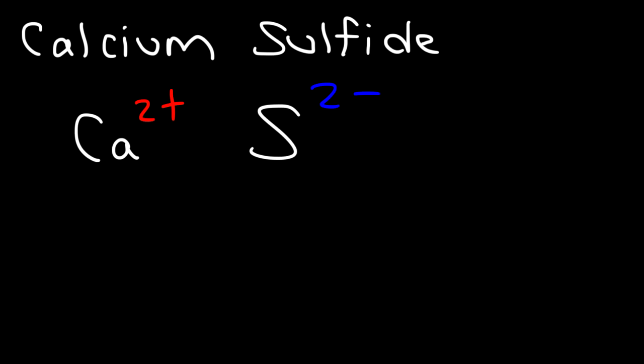Notice that the magnitude of the charges are the same, 2 plus and 2 minus. So you can simply write them in a 1 to 1 ratio. This is going to be CaS, calcium sulfide. That's the answer for this example.